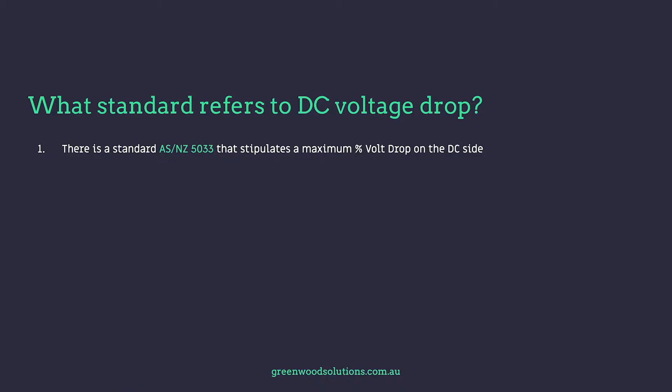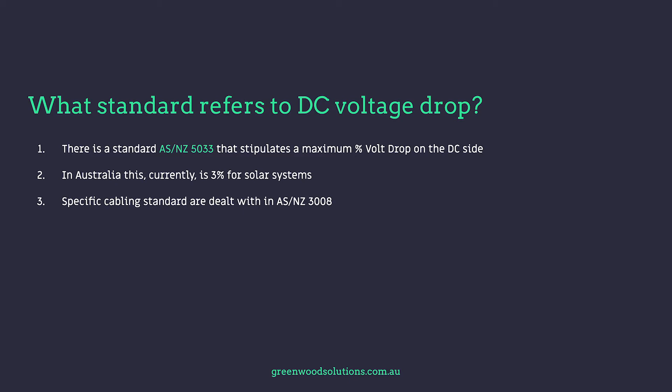So what standard do we reference when talking about DC Volt Drop? In Australia and New Zealand it is AS5033, and they stipulate a maximum Volt Drop percentage of 3%. For cable specs you must reference AS3008.